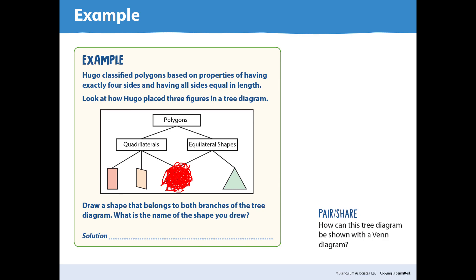Here's an example. Hugo classified polygons based on properties of having exactly four sides and having all sides of equal length. Look at how Hugo placed three figures in a tree diagram. Draw a shape that belongs to both branches of the tree diagram. I already had that shape drawn, so I scribbled it out so you can't see what I drew. Go ahead and draw that shape in your book that is both a quadrilateral and an equilateral shape. The shape is, of course, a square. Squares are both quadrilaterals, and they have equal sides.